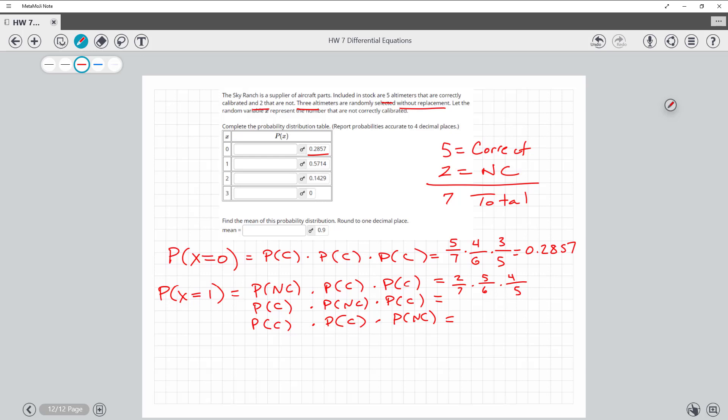And if you do the same thing here, so probability correct, five out of seven, not correct, two out of six, correct, would I have four out of five, you're going to get the same answer, 0.19047. The next one correct, five out of seven correct, four out of six correct, not correct, two out of five.